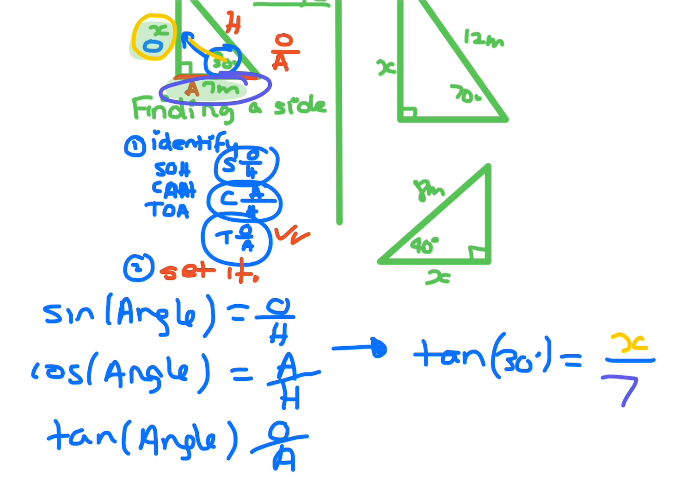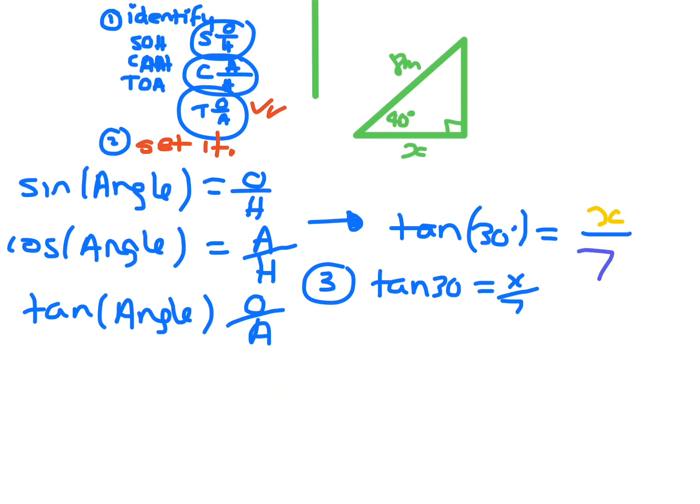Once you've done that, the next step is to actually solve the equation. So you've got tan 30 is X on 7. Now what you want to find is on the right hand side, that's the X. So just swap it around. So you've got X on 7 equals tan 30.